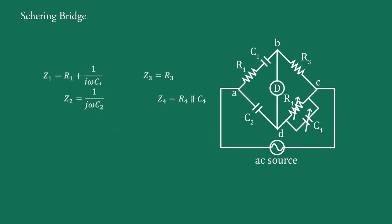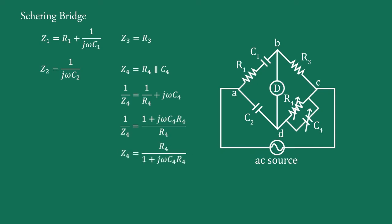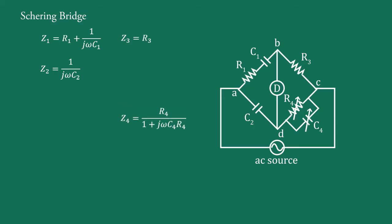Z4 = R4 parallel with C4. To calculate Z4: 1/Z4 = 1/R4 + jωC4, which equals (1 + jωC4·R4) / R4. Therefore, Z4 = R4 / (1 + jωC4·R4).